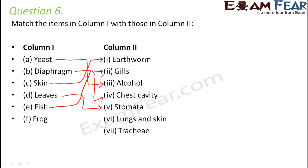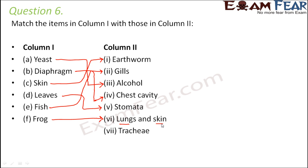Fish have gills as their respiratory organs because they absorb oxygen which is dissolved in water. Frog — frogs have lungs as well as their skin, which also acts as the respiratory surface, so both lungs and skin act as their respiratory organs.